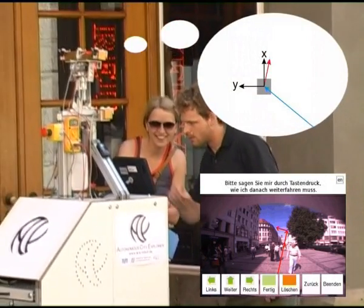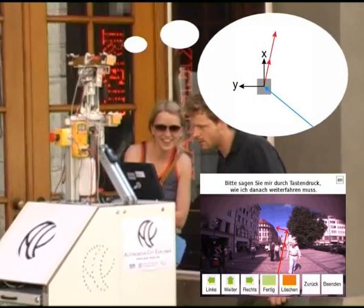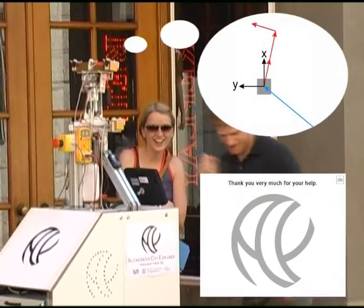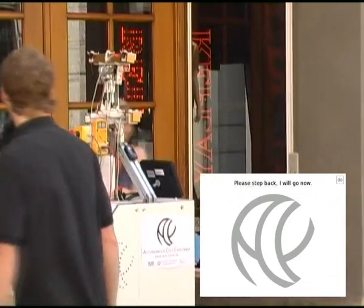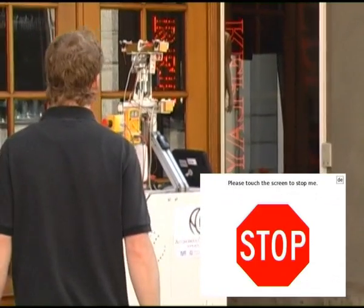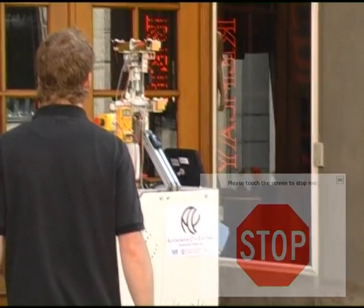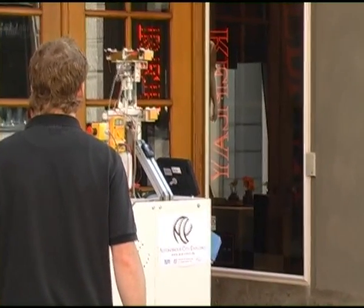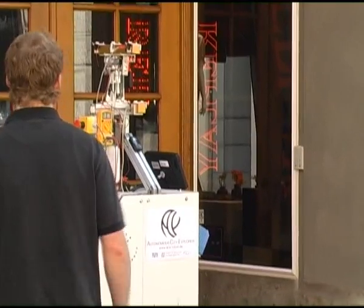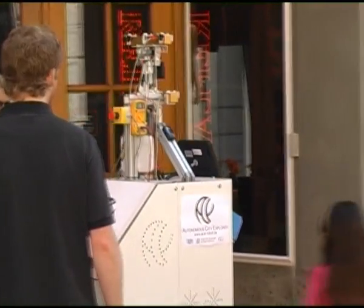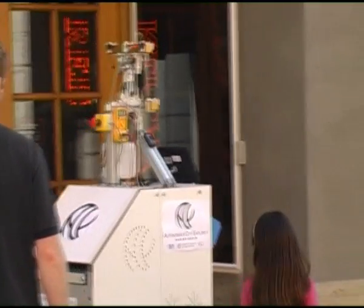Internally, ACE creates a semantic graph that represents its knowledge about the route. As it makes progress, it associates the graph with the metric occupancy grid and sends the next node to the path planning module as a global waypoint.